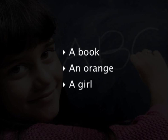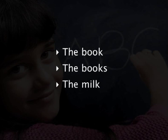The definite article is used before singular countable nouns, plural countable nouns, and uncountable nouns. For example: the book, the books, the milk.